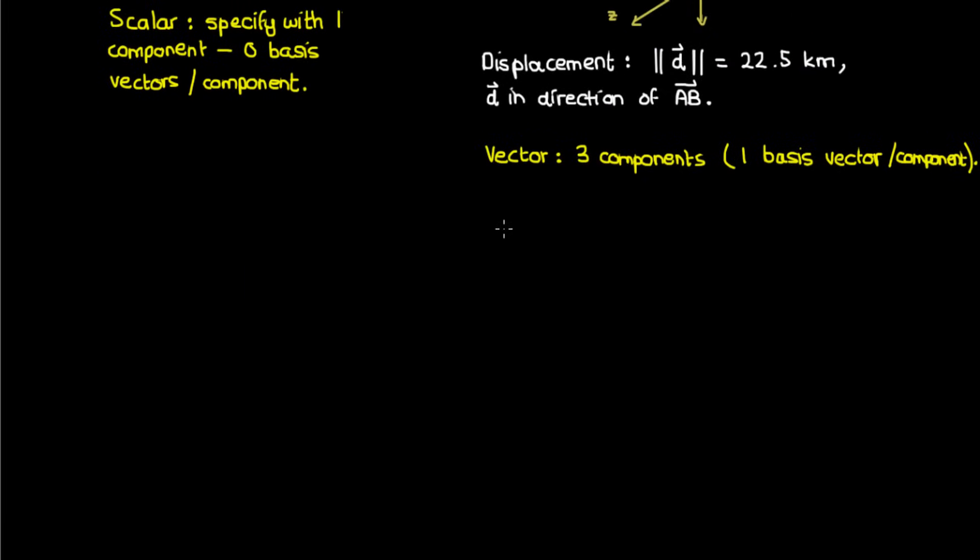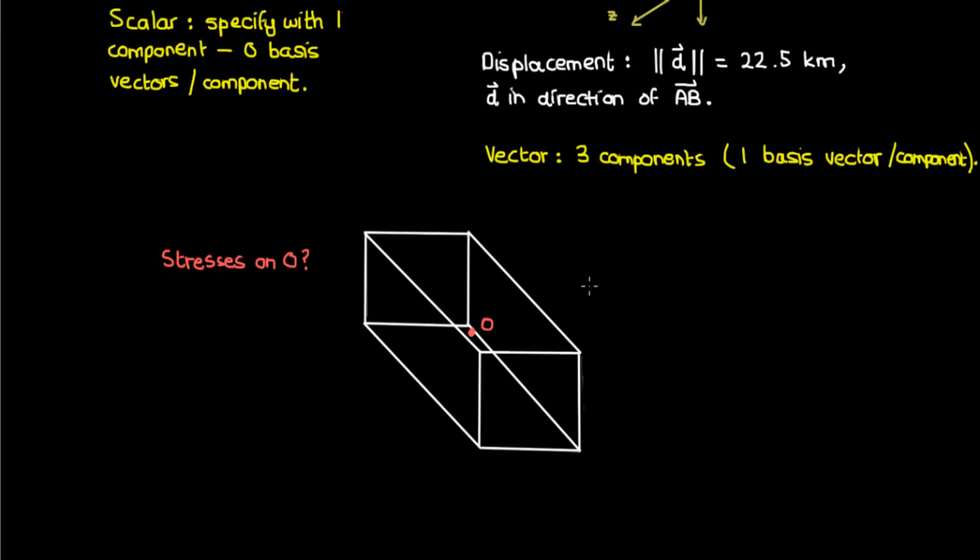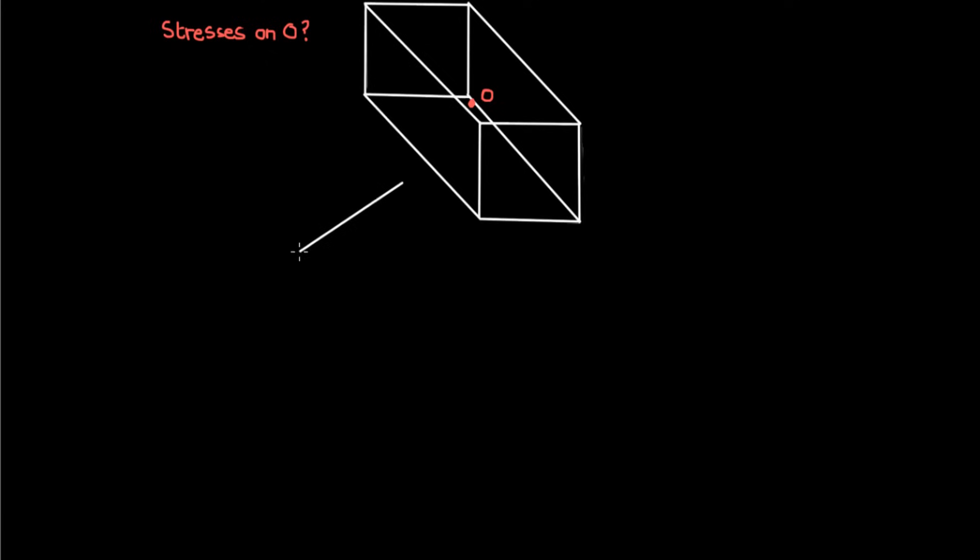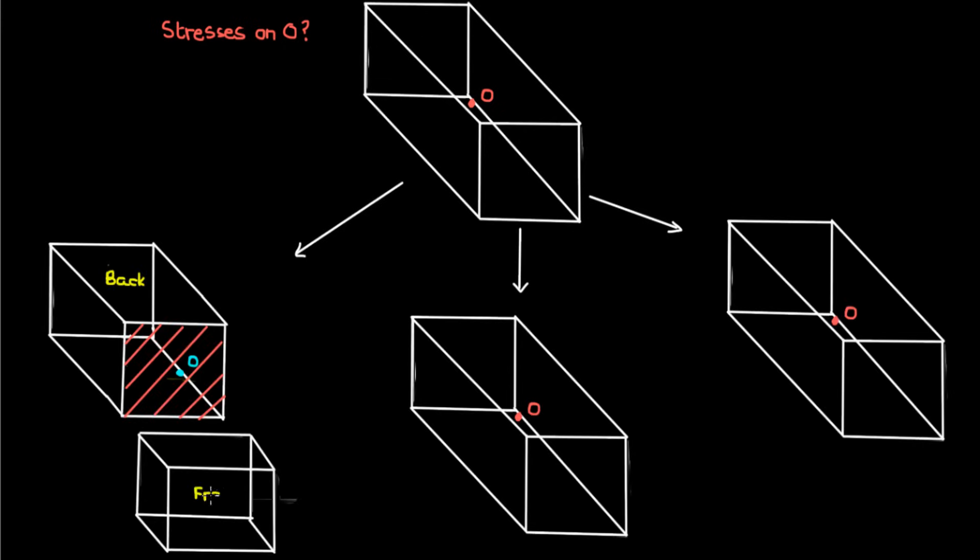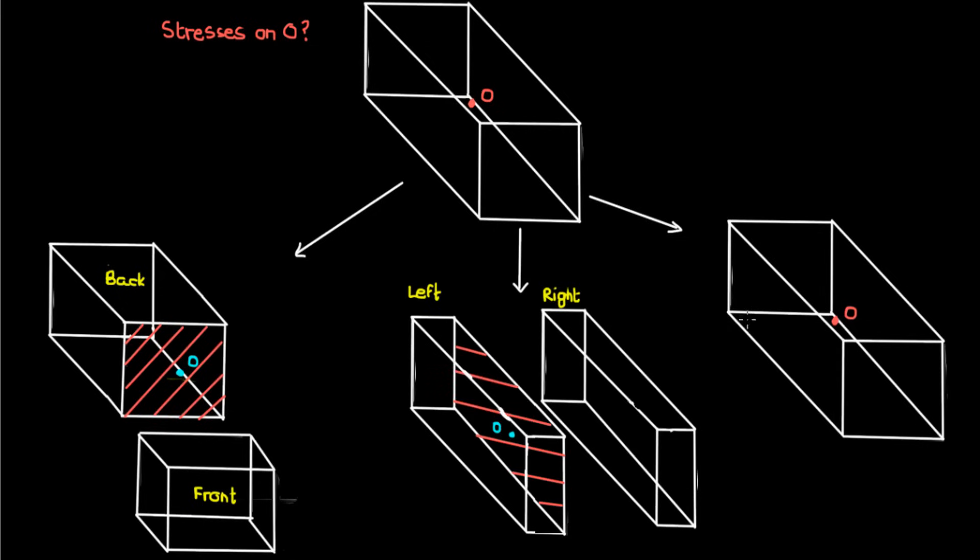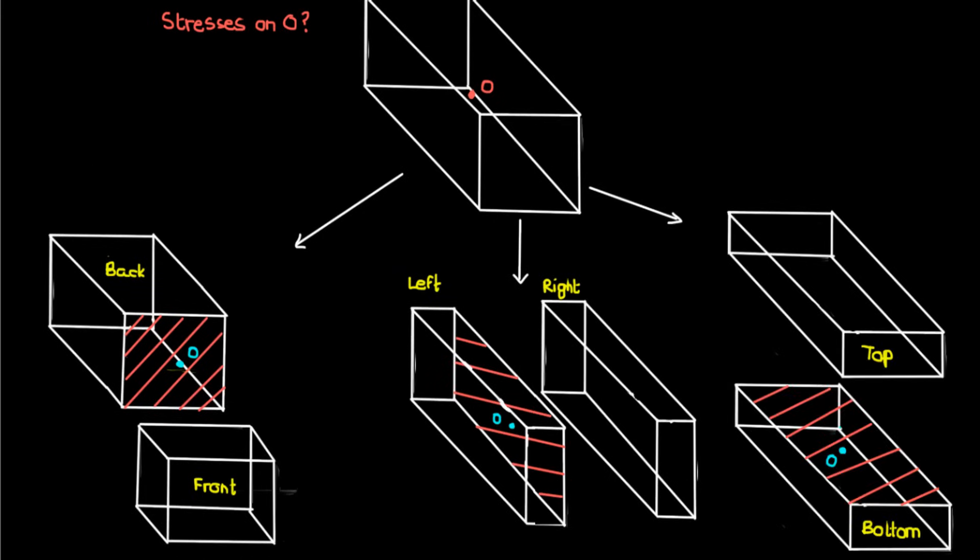Staying with the New York theme that we've got going, suppose I'm looking at a rectangular steel beam on Brooklyn Bridge. Let's also suppose that there's a point O inside that steel beam. If I wanted to specify all the stresses that are acting on point O, how would I go about doing that? Well, what I can do is that I can start by making three cross sections of the beam through this point O. I can make a cross section that cuts the beam in half like this, I can make another cross section like this, and a third cross section which looks like this. I'll also let the orientation of my x, y, and z axes look like this.